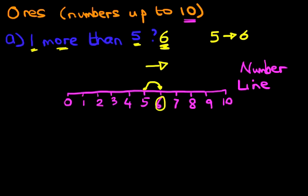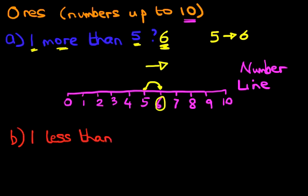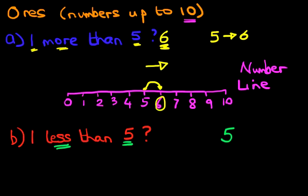Now let's look at the same question but we're now going to do less than. What is one less than five? The first method is counting. We write down number five, and because we're doing less than, we are going backwards — back by one. So what number comes before five? The number before five is four, and that is our answer: four.